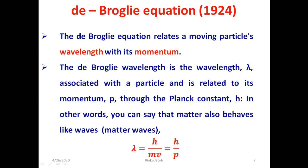De Broglie was awarded the Nobel Prize in 1929 for his hypothesis. Thomson and Davisson shared the Nobel Prize for physics in 1937 for their experimental work which proved the de Broglie hypothesis.